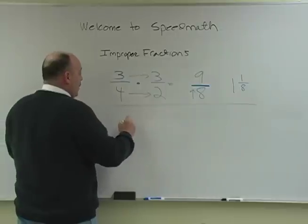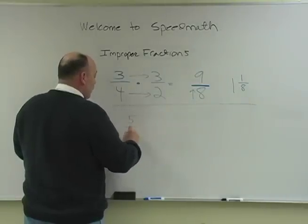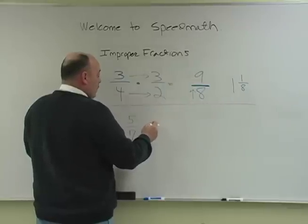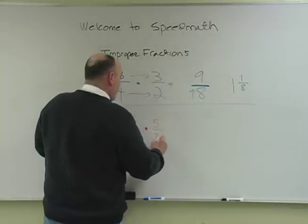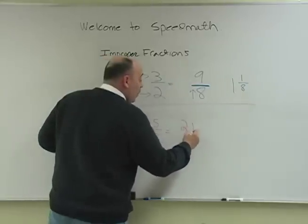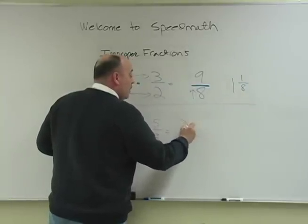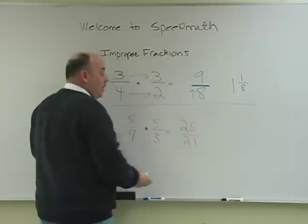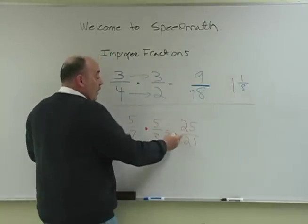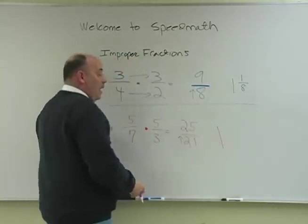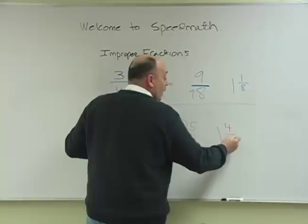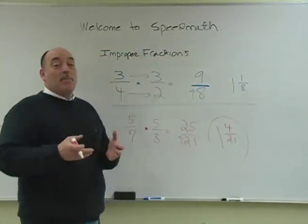Let's do one more problem to reinforce what we've discussed. Let's say our fraction is 5 over 7, and we multiply it by 5 over 3. Our answer here will be 25 over 21. So how many times does 21 go into 25? It goes in one whole time, with a remainder of 4. So you put the 4 here and bring the 21 over, giving you the mixed number 1 and 4 twenty-firsts.